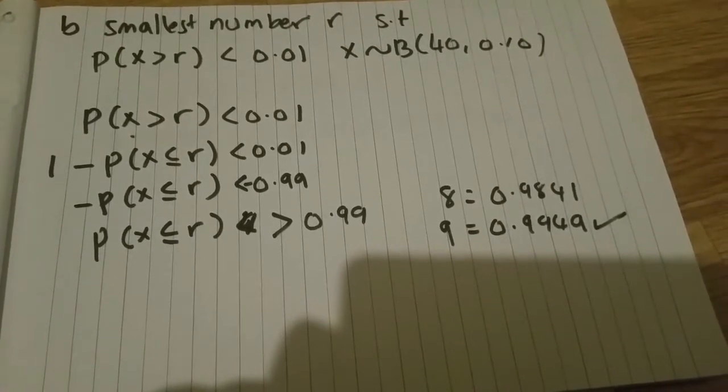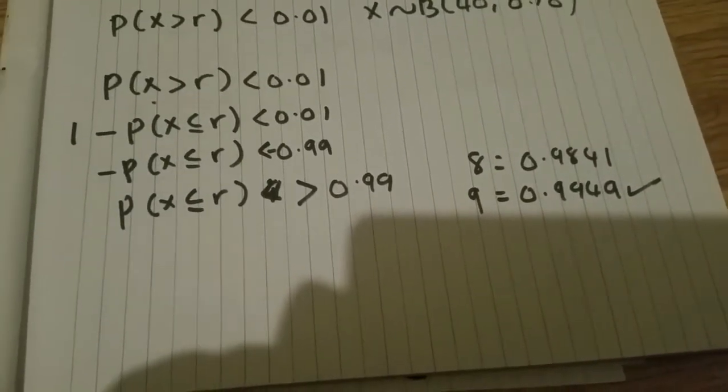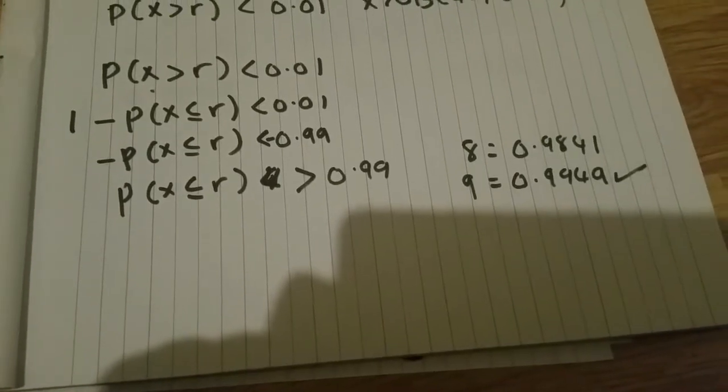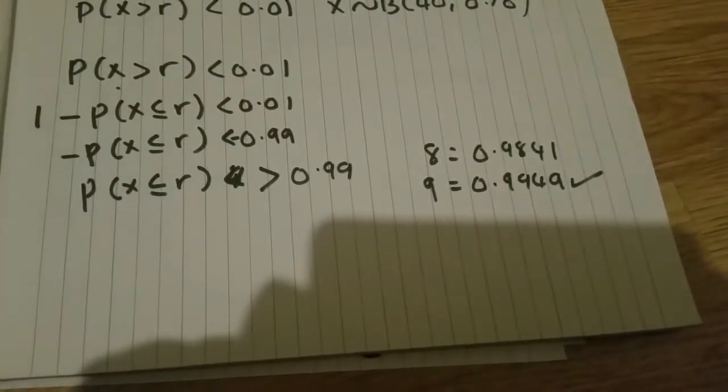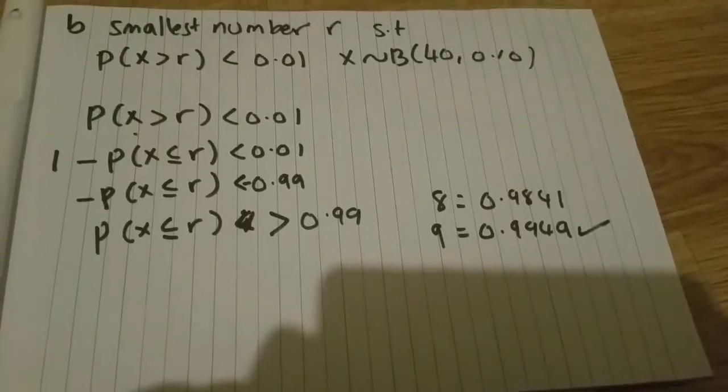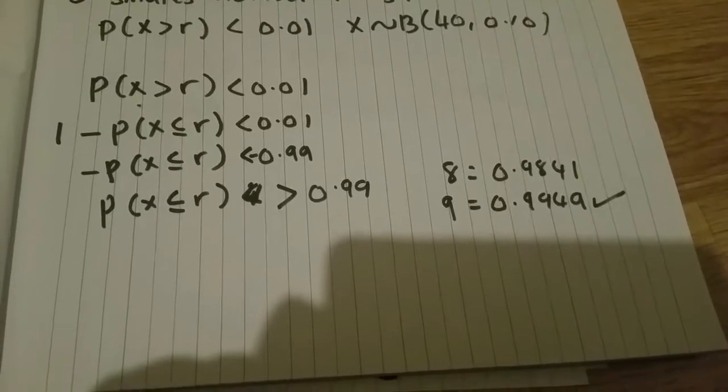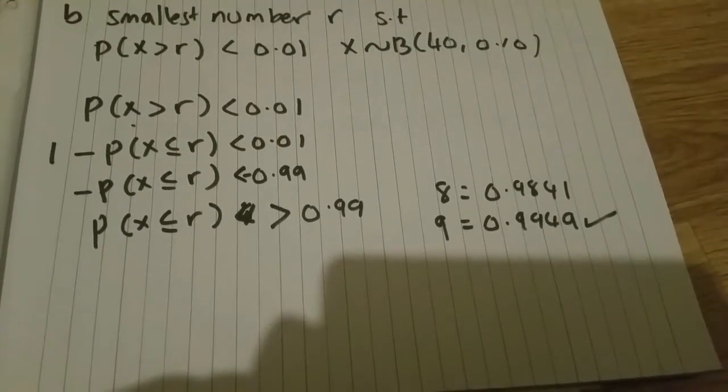Going back to our column in the table, we see that 8 is 0.9841 and 9 is 0.9949. We want to be greater than 0.99, so 9 is the one we pick here. If we picked 8 it would be too small - we need to be bigger than 0.99 and 9 is the one that does that.